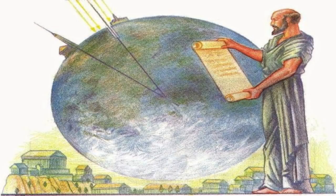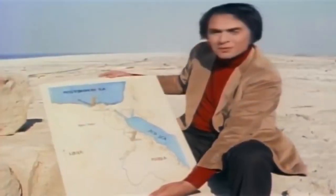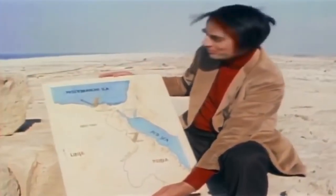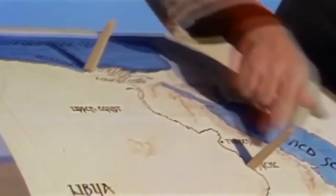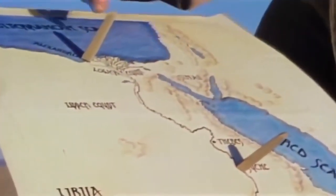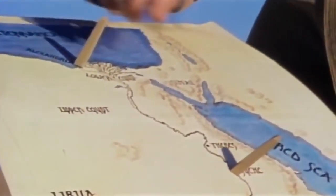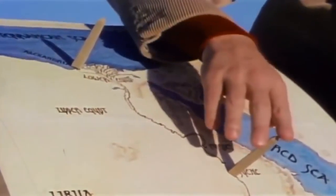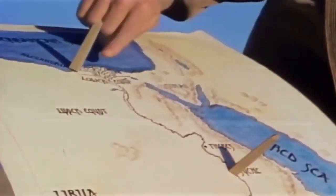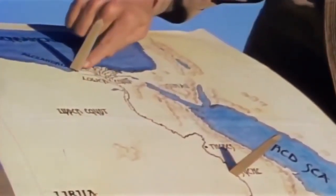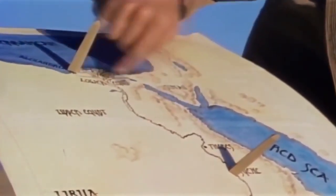One of the most common alleged proofs quoted for the Spherical Earth Theory is the Eratosthenes Sticks and Shadows experiment. Many people may remember NASA spokesman Carl Sagan presenting this experiment by using a map of Egypt with two obelisks attached and showing their resulting shadows.